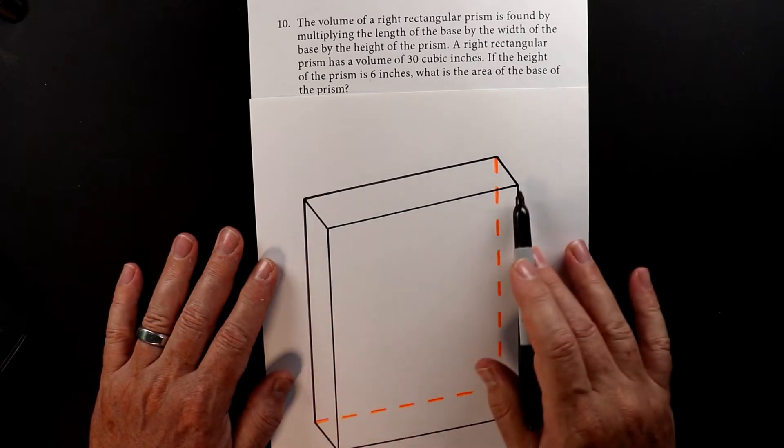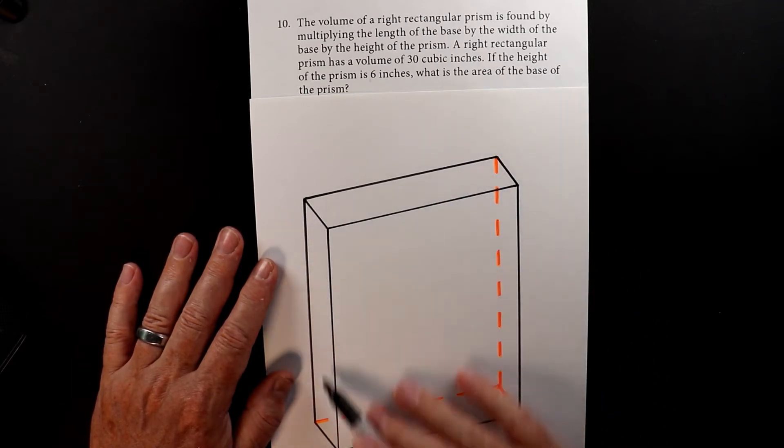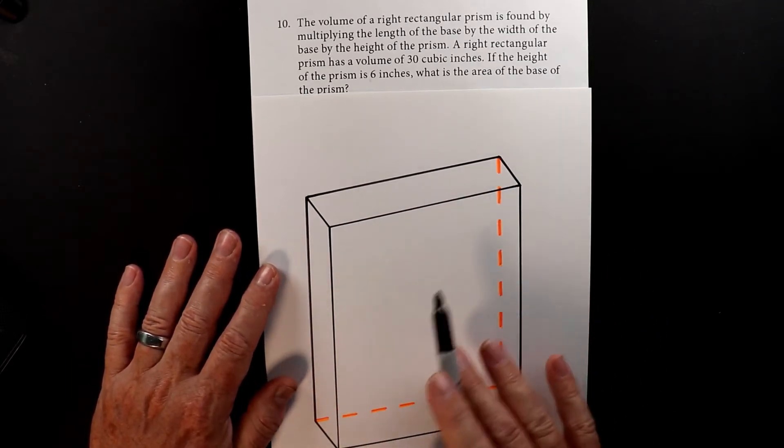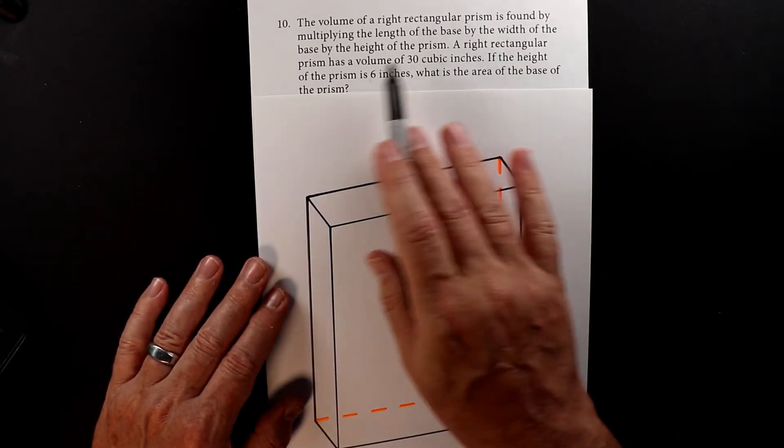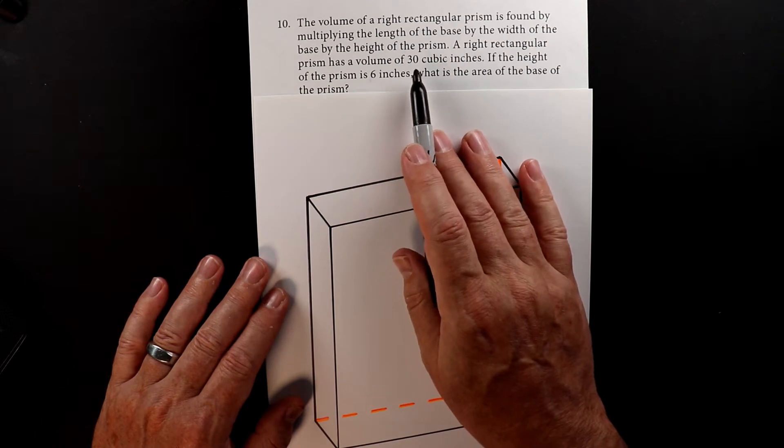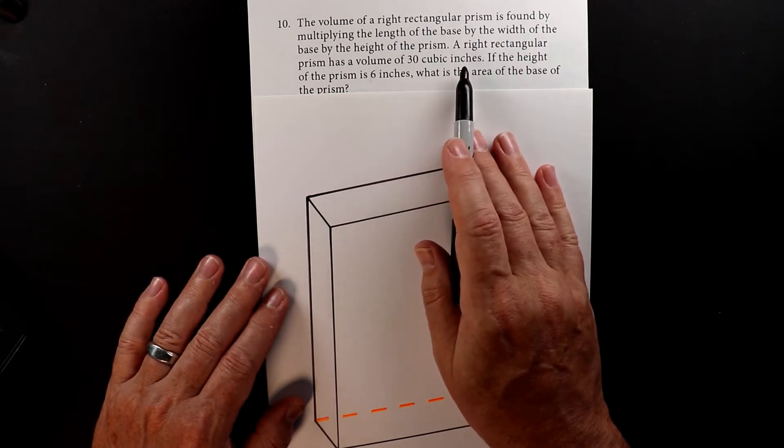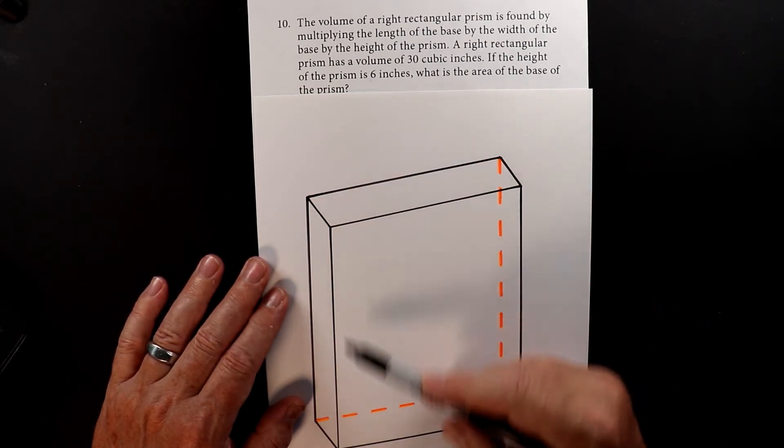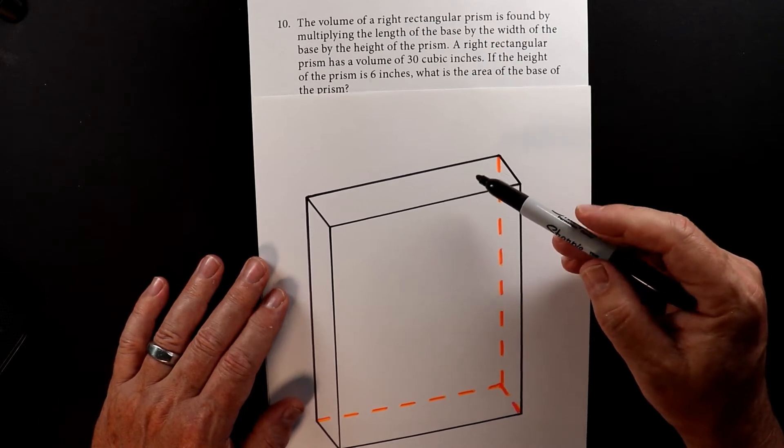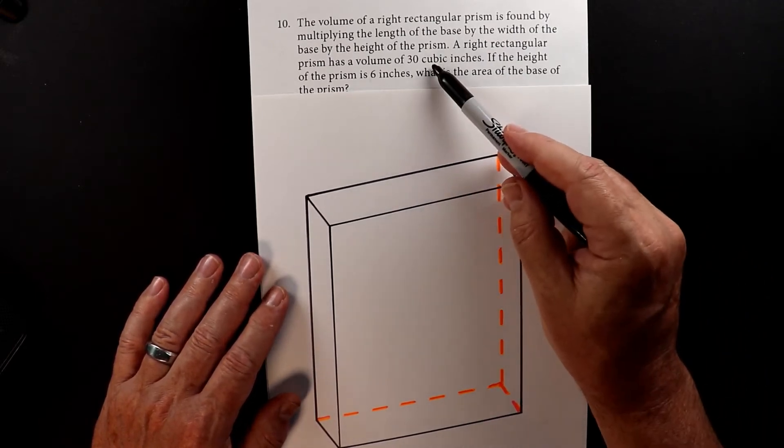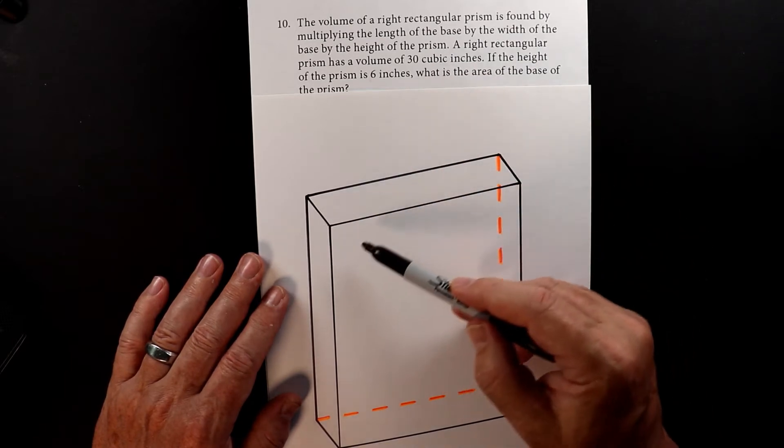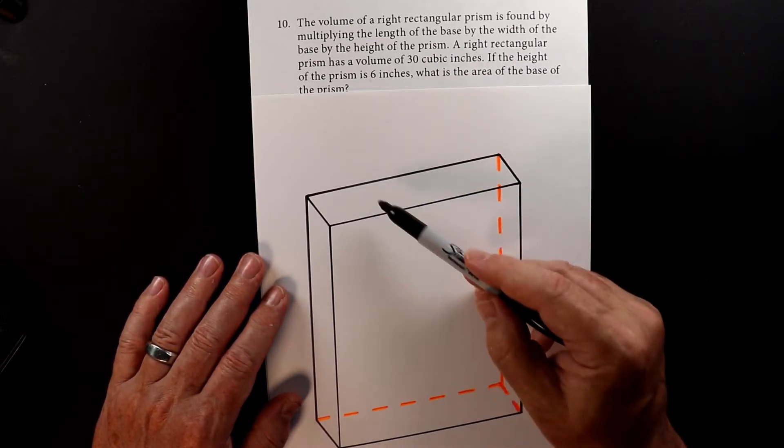Now, since it's rectangular, I made something that's obviously a rectangle, but it doesn't have to be these exact dimensions. But what we do know, the right rectangular prism has a volume of 30 cubic inches. So if you filled this box up with water, that water would fill 30 cubic inches, 30 cubes that are one inch by one inch.